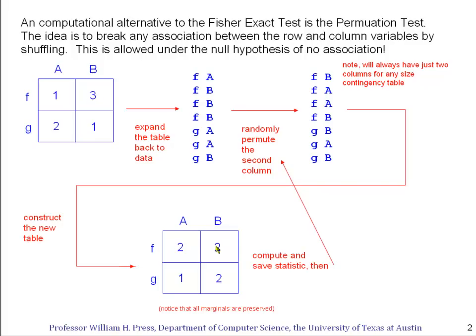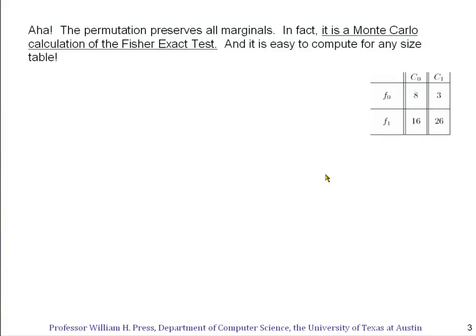all the marginals are exactly preserved from the original contingency table. In the F row, two plus two is four. And up here in the original data, one plus three is four. Well, obviously they're all preserved because we have the same number of F events and G events as we did in the original data in this first column. And we have in the second column the same number of A's and B's as the original data.